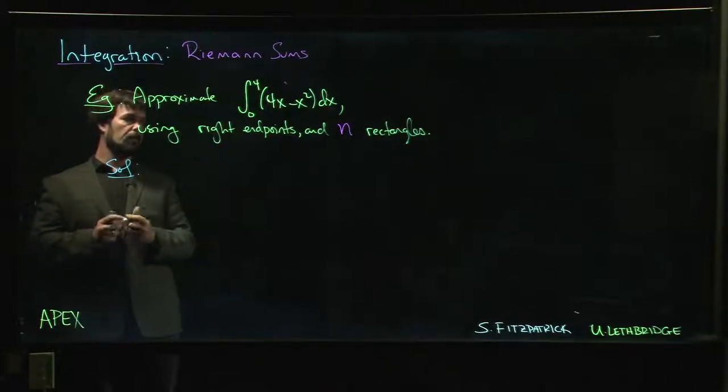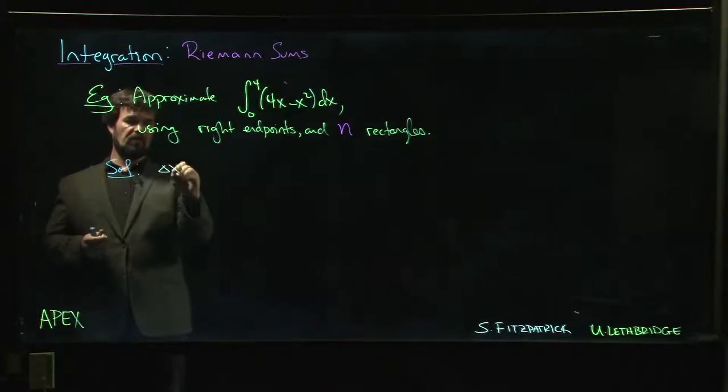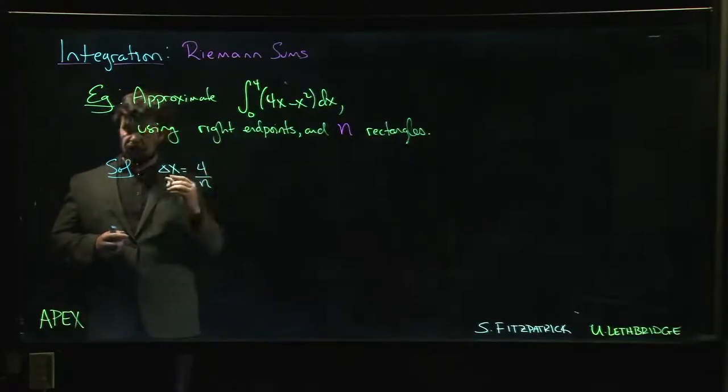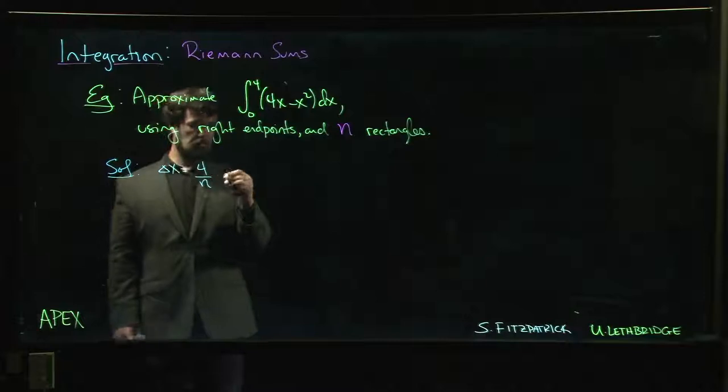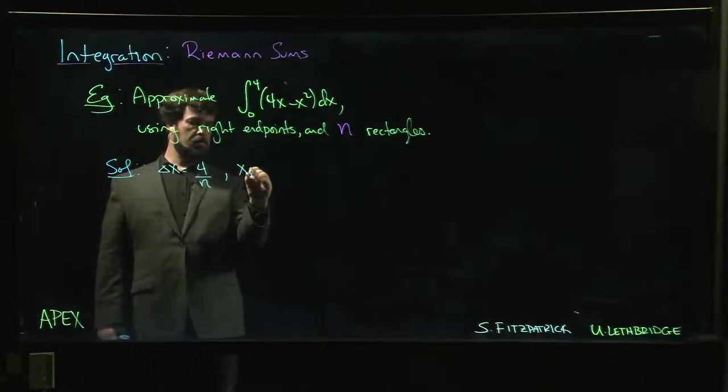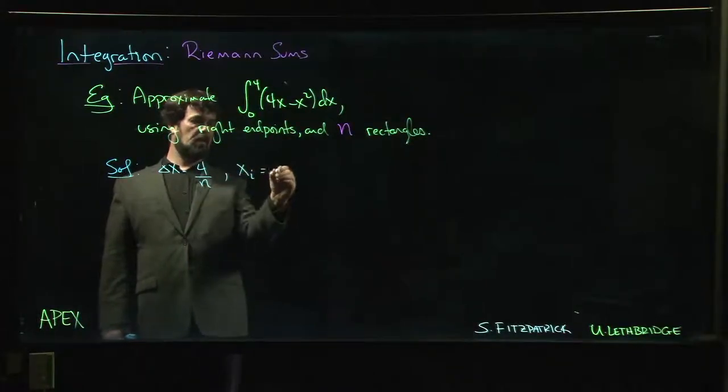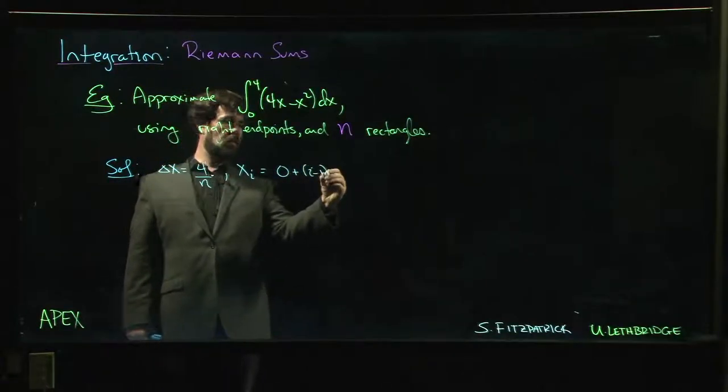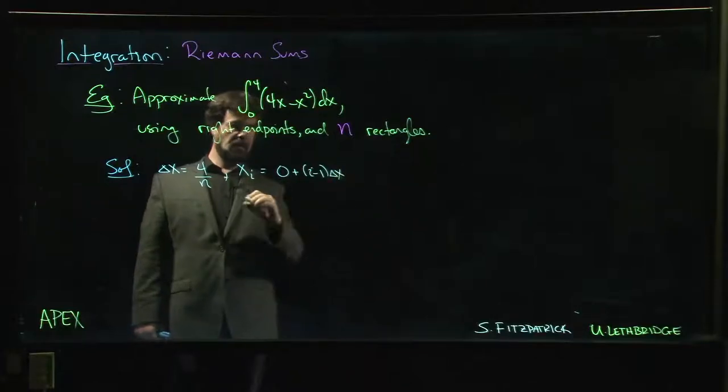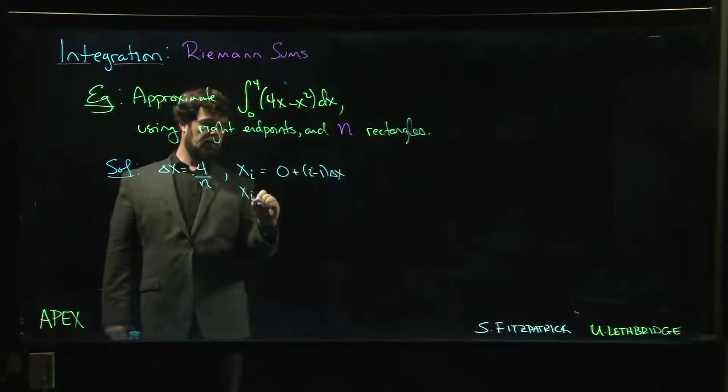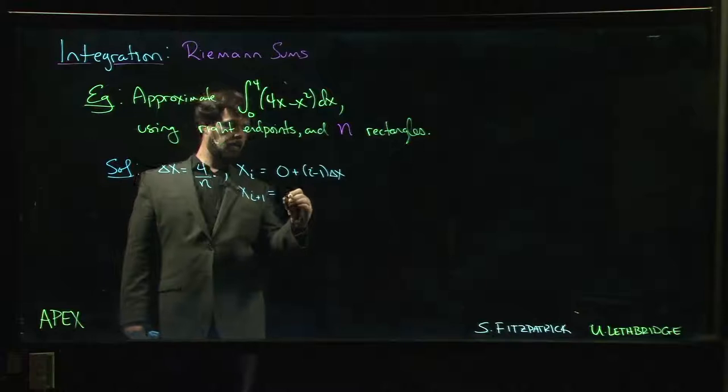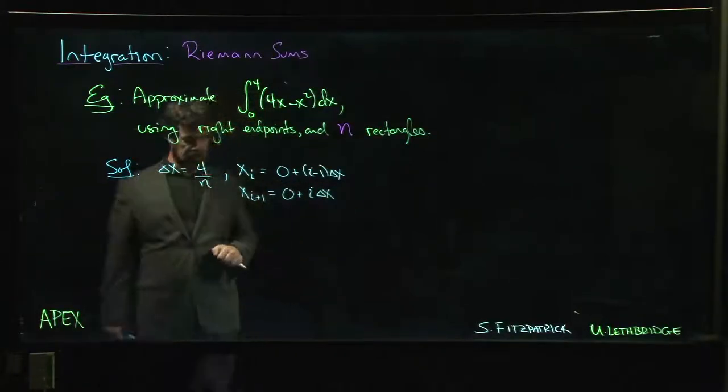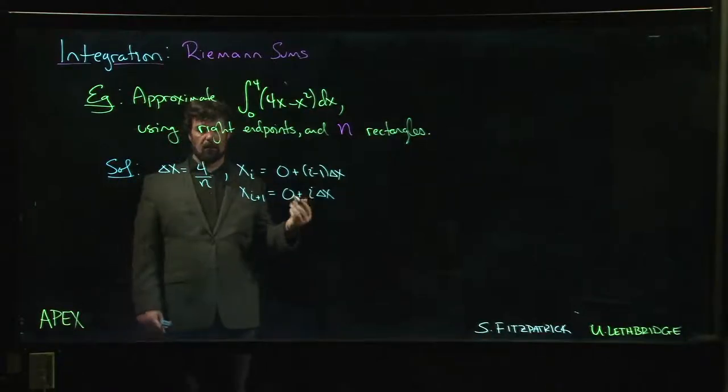The way the solution is going to look: our Delta X is going to be 4 minus 0 over n rectangles. Our Xi is going to be the left endpoint, which is 0 plus i minus 1 times Delta X. Xi plus 1 is going to be 0 plus i times Delta X.